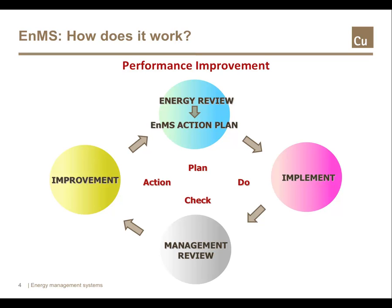In order to obtain energy performance improvements, you must conduct an energy review and identify an action plan. You then implement the plan, followed by a check of the performance through review with management, and you act on the identified improvements. Together, these steps complete a cycle: plan, implement, review and improve.